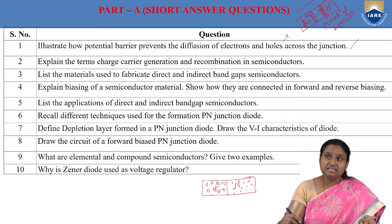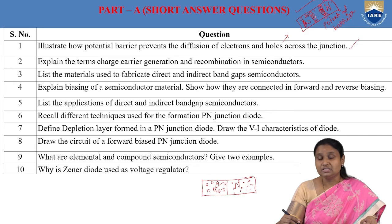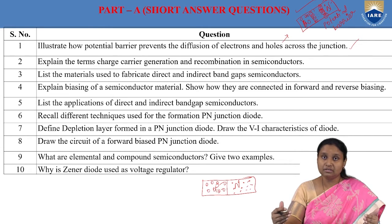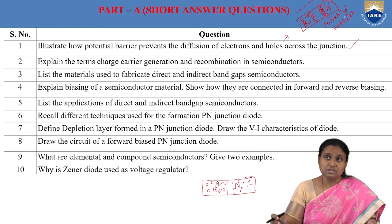The region where we have immobile charge carriers — both positive and negative — is called the depletion layer, the layer depleted of free charge carriers. The potential barrier creates a barrier voltage which stops further diffusion of electrons and holes across the junction.